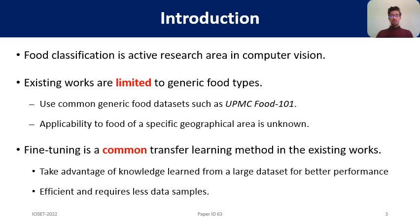Food classification has been an active area of research for the last 7-8 years, and many works have been done for the task. However, existing works are mostly limited to the classification of generic food types, trained using generic food datasets such as the popular UPMC Food-101. Due to this reason, they cannot be applied to regional food classification. In most existing works, transfer learning — also called fine-tuning — is commonly used, where a neural network is first trained on a large dataset then retrained on a smaller dataset. It is an efficient approach for training networks with fewer samples.